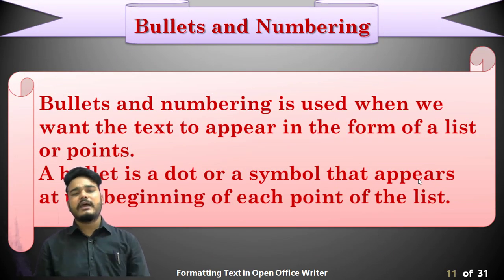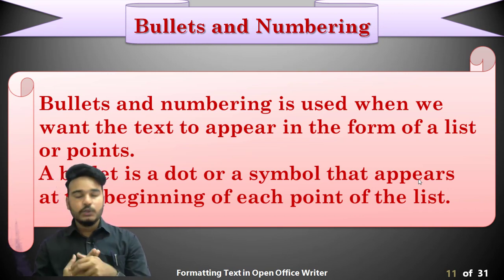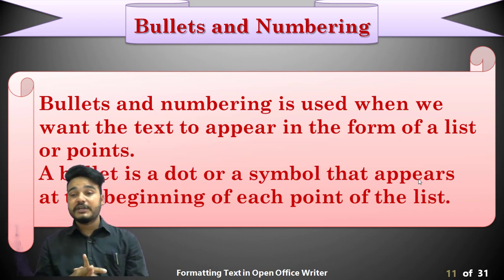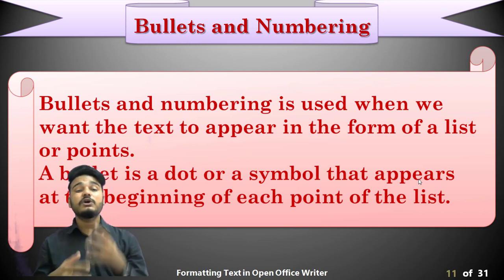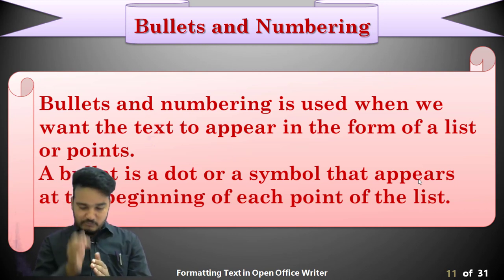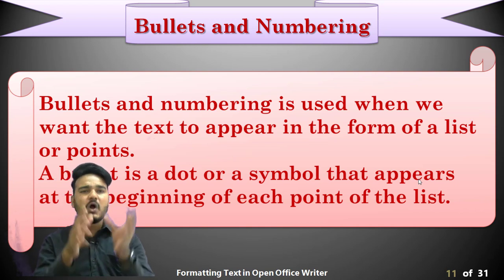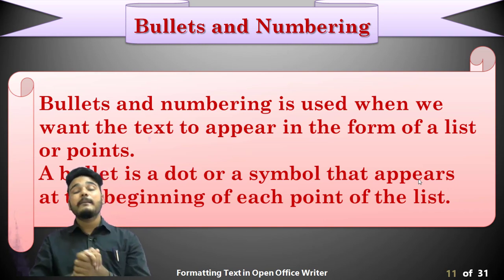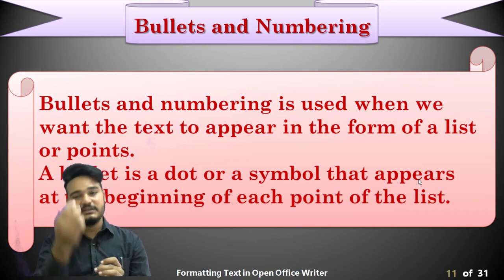Bullets and numbering — what are bullets? Bullet means the symbols which are used in front of particular text. Bullets and numbering are used when we want our text to look very good or appear in the form of a list. Bullets are nothing but some dots or particular symbols added at the beginning of each line in your list.